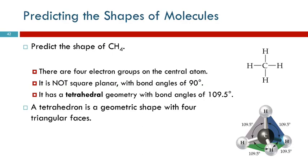Let's look at CH4. Here's the Lewis structure for CH4 — kind of boring, there aren't even any lone pairs. How many electron groups on the central atom? Four. So four things are getting away from each other. This is where it gets a little more difficult to visualize because we're not used to this particular shape.